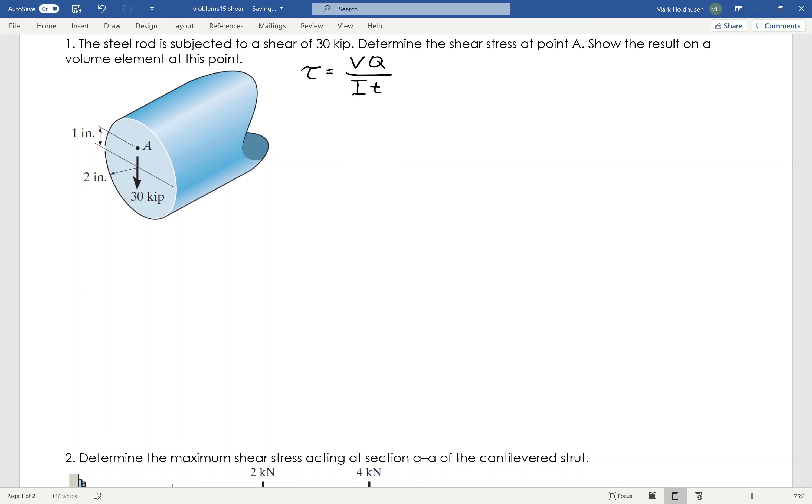What Q is, is the centroid and the area of the area above or below the point that I'm at. So, what I'm looking at here is essentially this area right here. I want to find the centroid of that area and the area of that area to figure out what Q is for this.